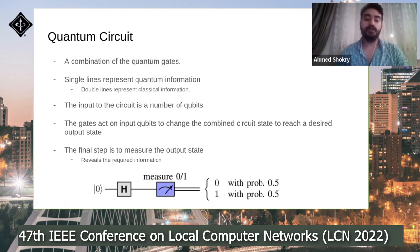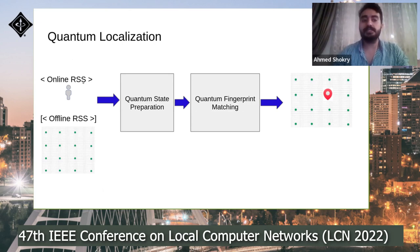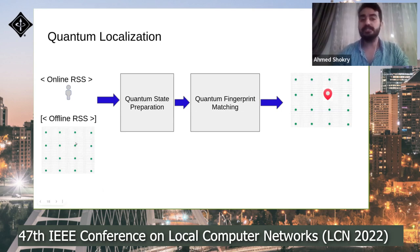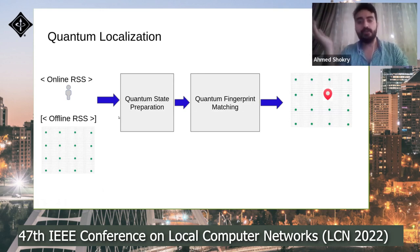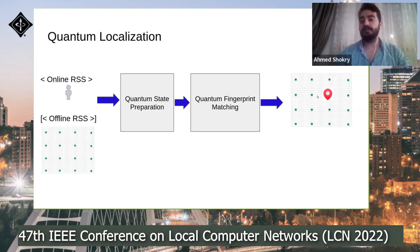Our quantum localization algorithm takes as input the online received signal strength vector from different access points, and a set of offline RSS vectors at different fingerprint locations. The first stage is quantum state preparation, where we encode the online and offline RSS vectors into quantum registers. Then we use a quantum fingerprint matching circuit to get the estimated location.